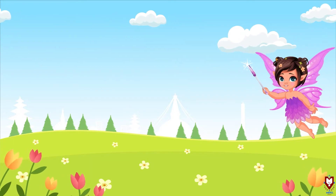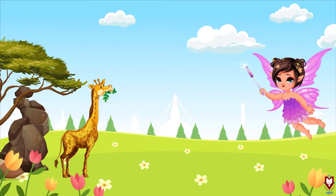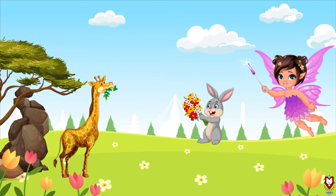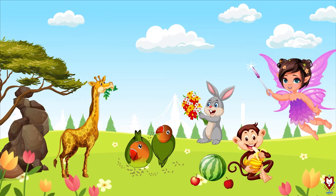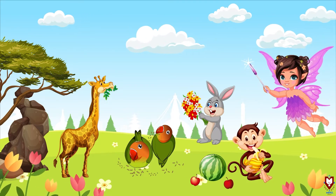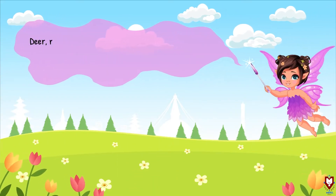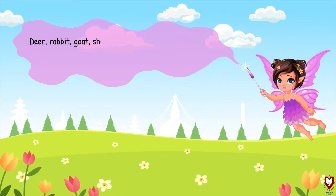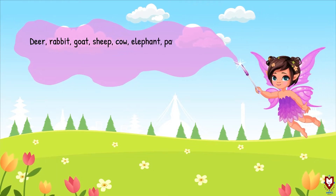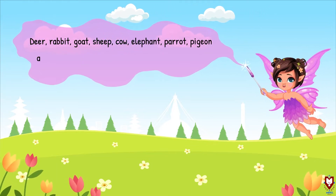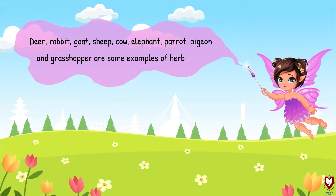Deer, rabbit, goat, sheep, cow, elephant, parrot, pigeon, and grasshopper are some examples of herbivores.